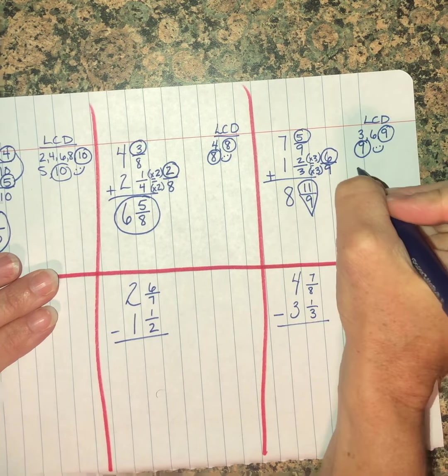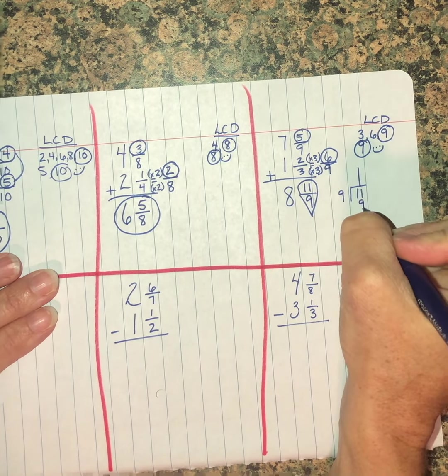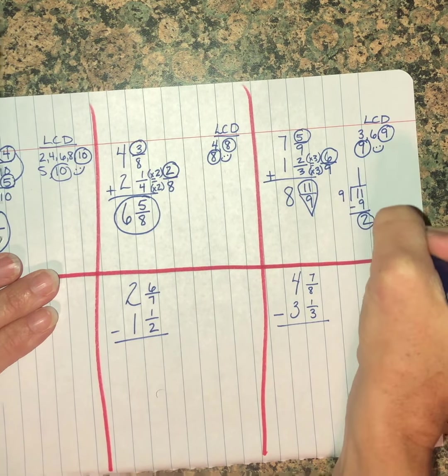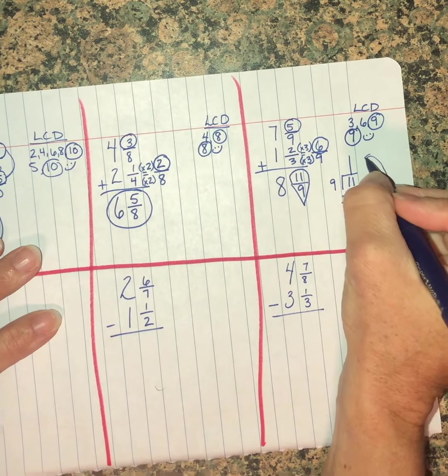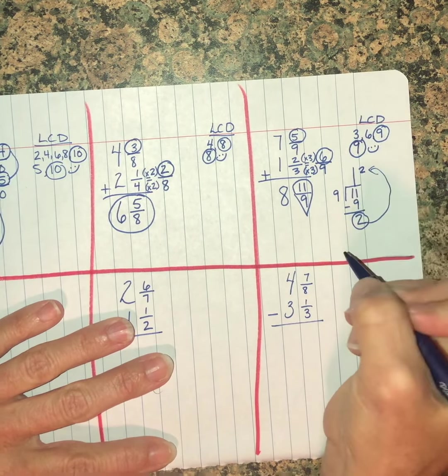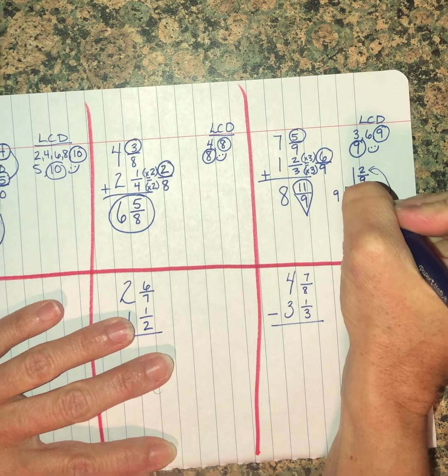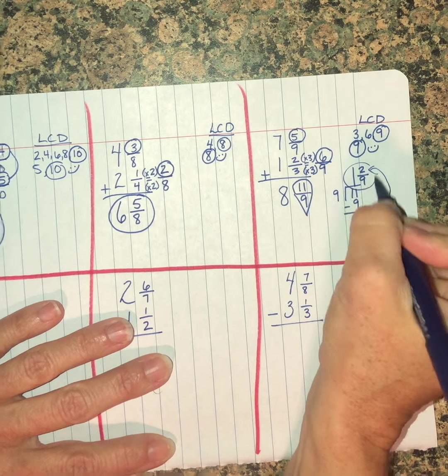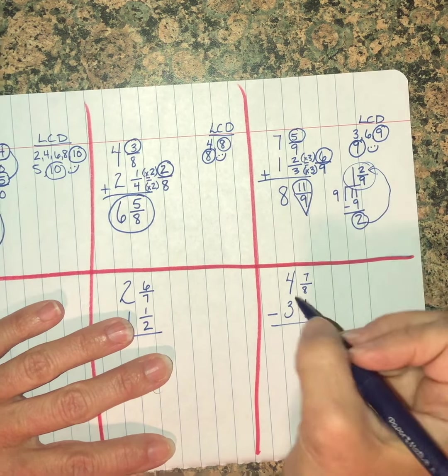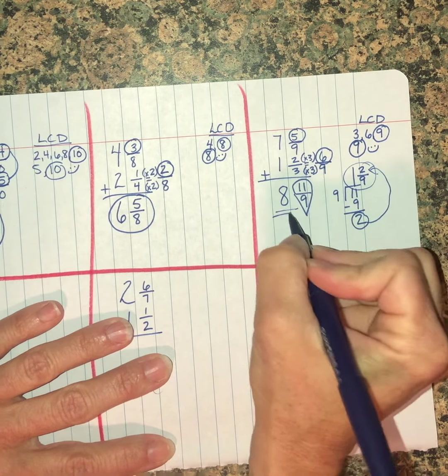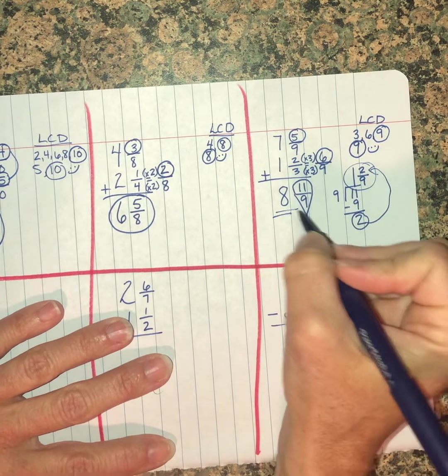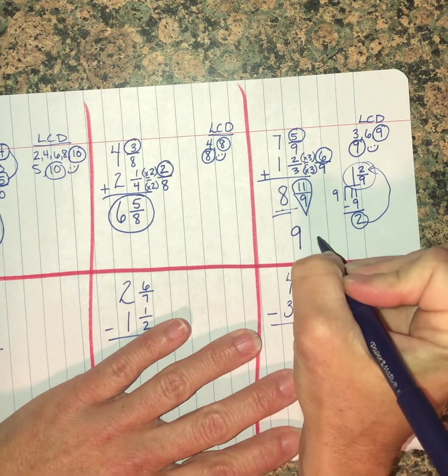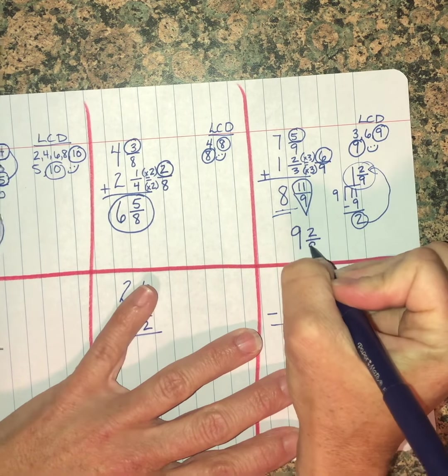Nine will go into eleven one time. Eleven minus nine is two. Remember, your remainder comes up here and becomes your new numerator. Your denominator dominates, he always stays the same. Now the number one mistake I see kids do is they circle this and they say I'm done, that's the answer. But you can't forget about this eight. You have to combine the eight plus the one, and your final answer is nine and two-ninths.